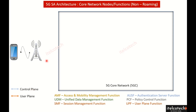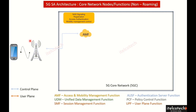Any user who wants to connect to the network first has to connect with the AMF — the Access and Mobility Management Function — which is the very first node that comes into the picture. AMF is responsible for authentication for each user coming to the core network, and it does this in conjunction with the Authentication Server Function, which is AUSF.